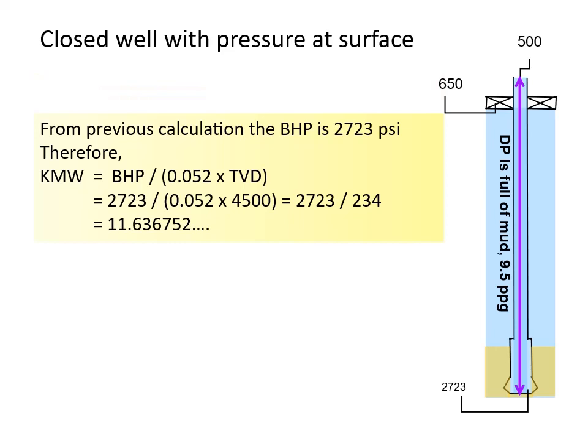BHP divided by multiplication result of 0.052 by TVD. 2723 divided by 234 equals 11.636752.